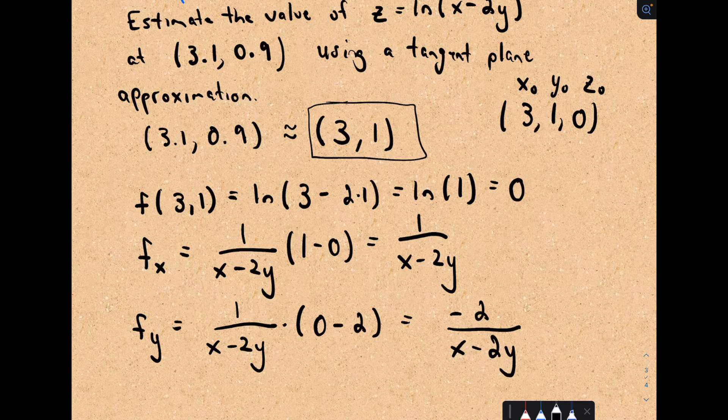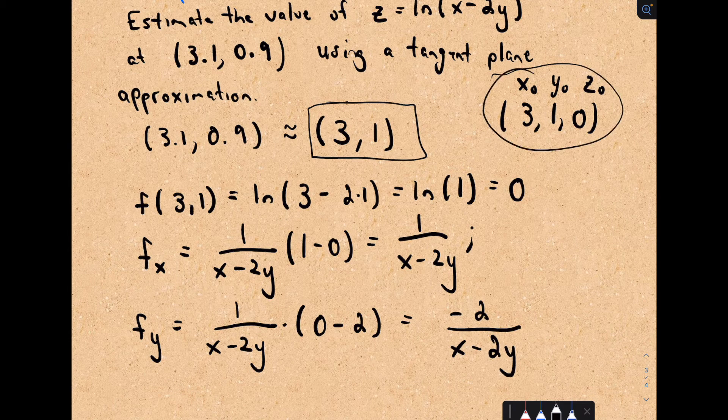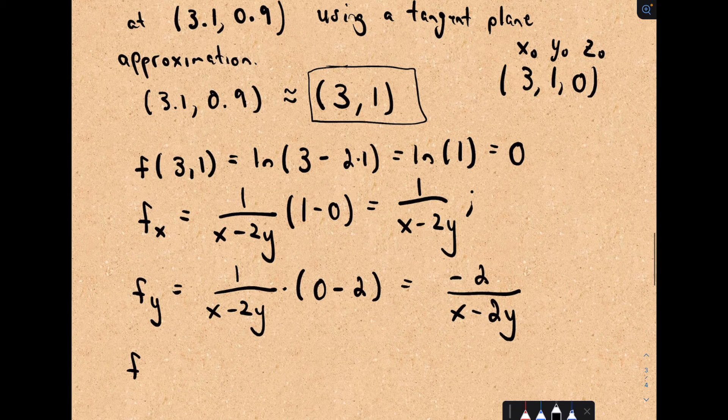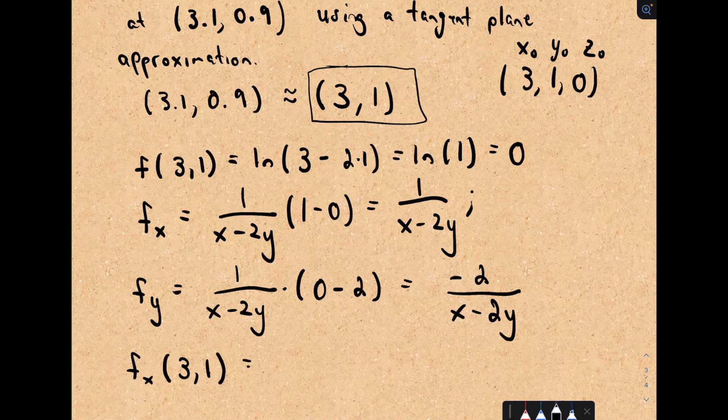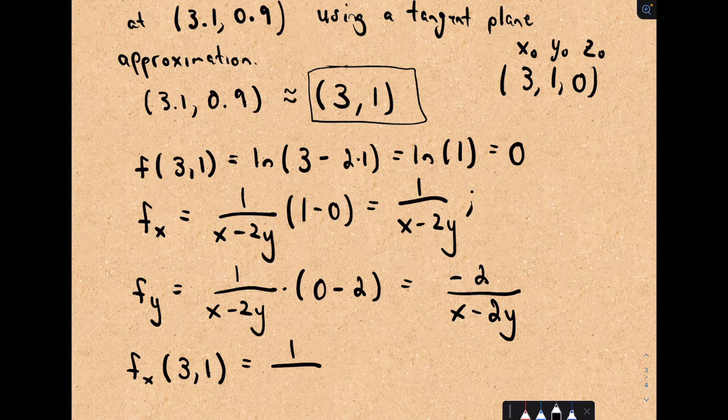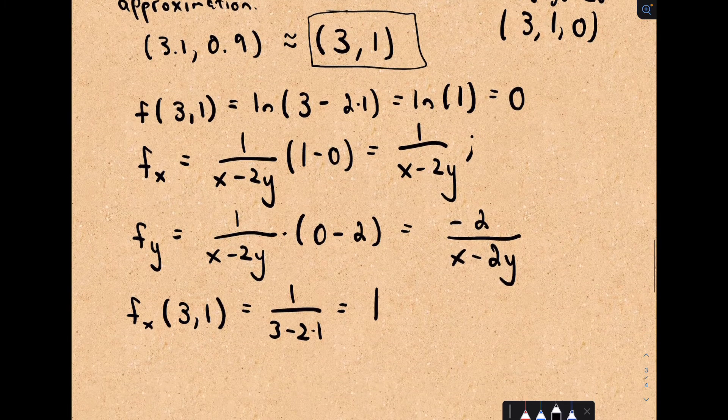And now it's just a matter of evaluating things. So if I evaluate the partial at 3, 1, I would have 1 over 3 minus 2 times 1, which is just going to give us 1. Okay, that works out nicely.